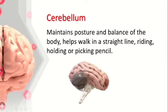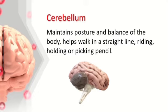Another region in the hindbrain is the cerebellum, which maintains the posture and balance of the body. A drunken man cannot walk properly because alcohol affects the cerebellum — without it working correctly, you cannot walk in a straight line. The cerebellum also helps you ride a cycle or vehicle and pick up a dropped pencil.